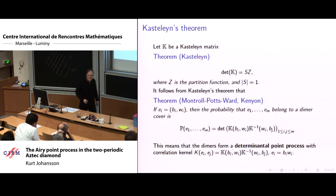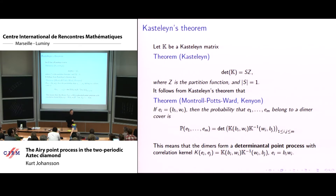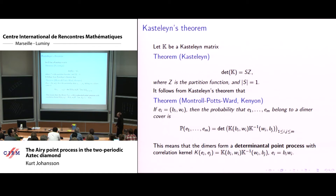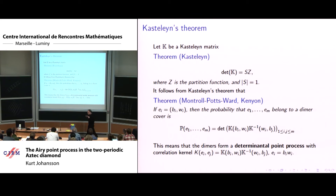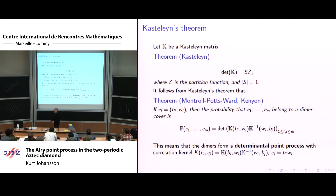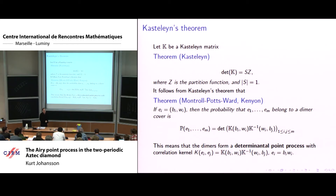The kernel for this determinantal process is obtained by inverting the Kasteleyn matrix, which in general is a very difficult task — inverting a large matrix.